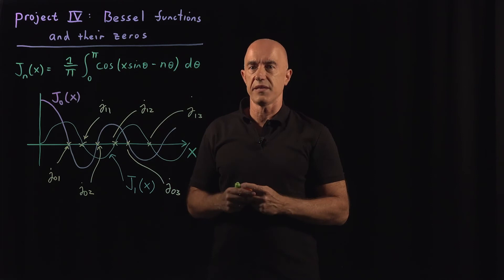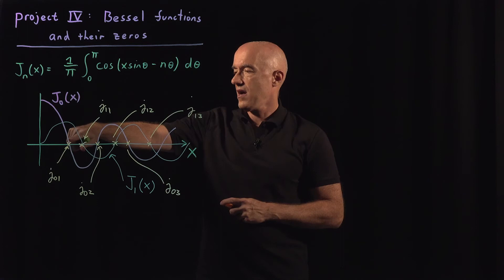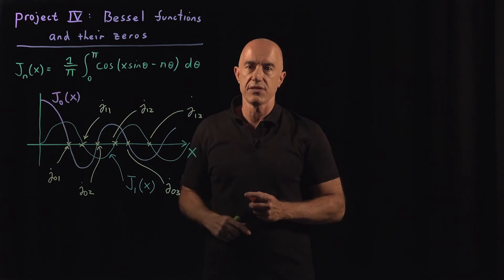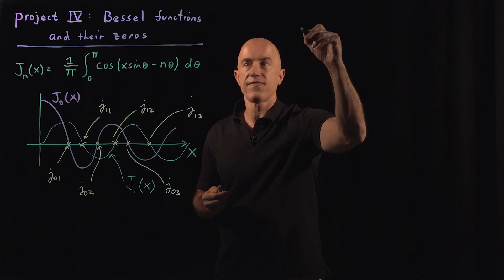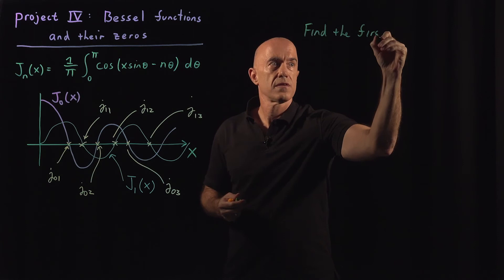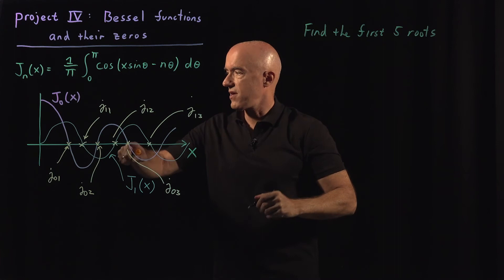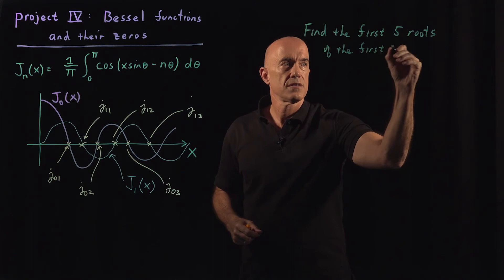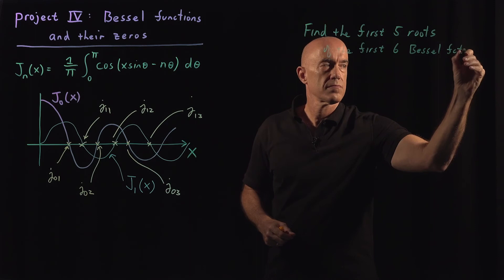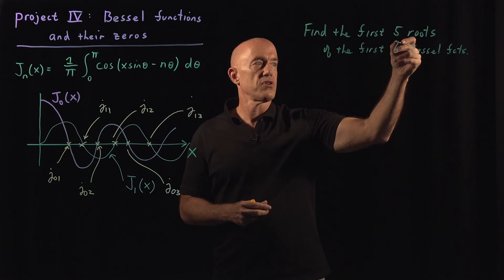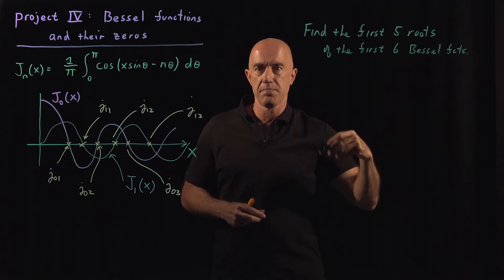So those are the zeros of the Bessel functions. To compute a zero, that's a root-finding problem — you want to find where J₀(x) equals zero. And there are multiple roots, not just one. The problem is to find the first five zeros of the first six Bessel functions. You'll use for loops: one looping over the roots, and one looping over the Bessel functions — the values of n.